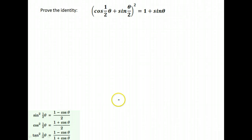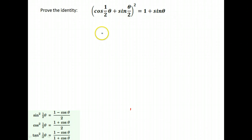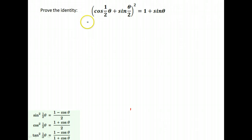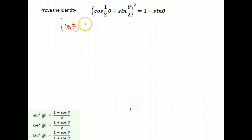Here's one last identity we'll do using half-angle identities. I have one written as one-half theta and the other as theta over 2 — they mean the same thing. We have these squared. When you square something, it means to take it times itself. I'm going to write them both as theta over 2 to simplify things, so we are FOILing and multiplying this by itself.